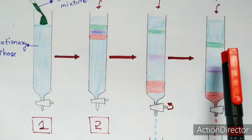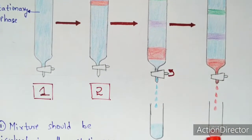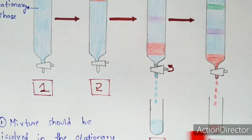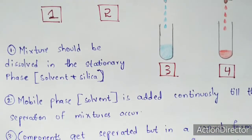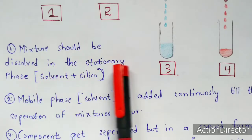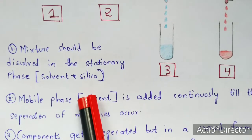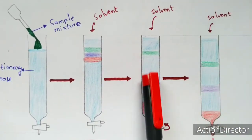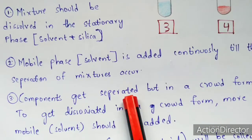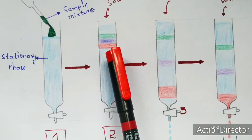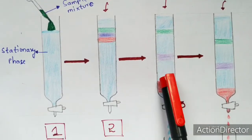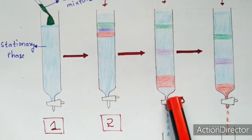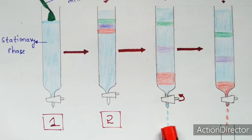In the fourth step, all components are fully separated, and the separated components get eluted out. The final elution of the separated sample occurs. To summarize: step one adds the mixture to the stationary phase; step two adds solvent continuously until separation begins; step three achieves proper separation; and in step four, the remaining solvent protrudes out carrying the separated components.